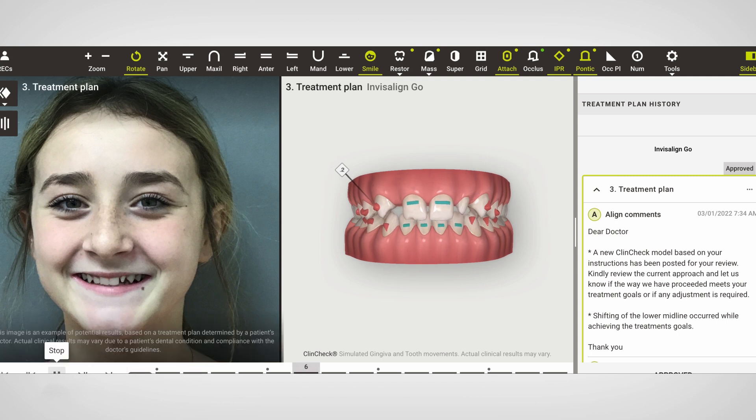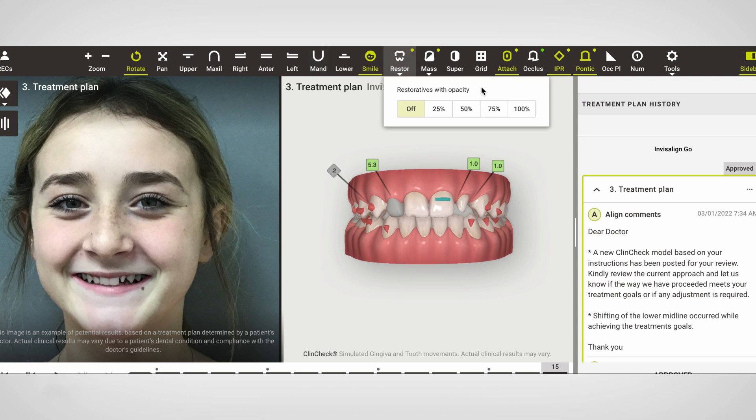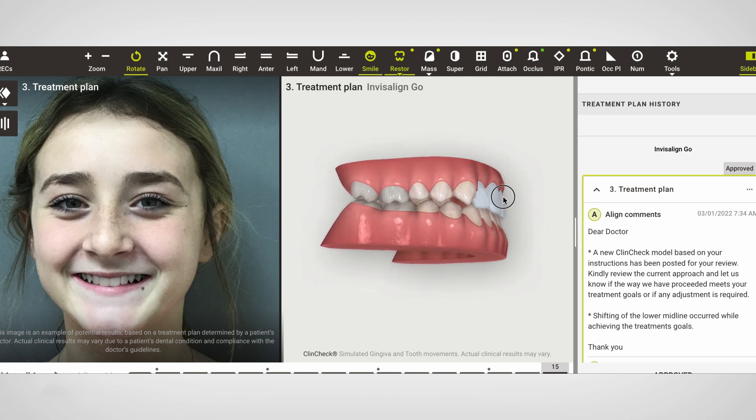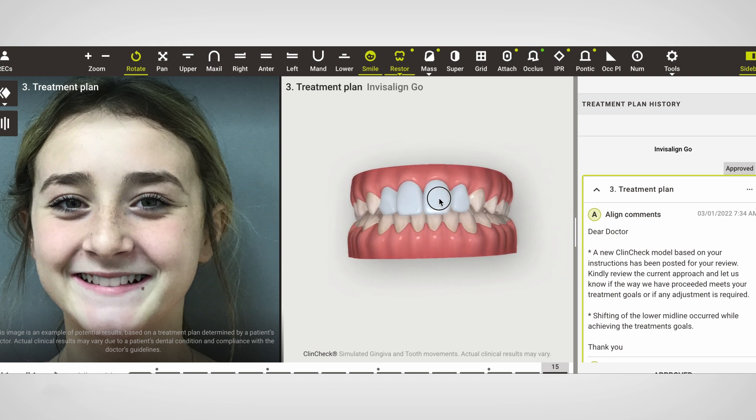We can use the Smile Architect tool to work on symmetry of spacing. And because you're doing clear aligner therapy, you can do this in stages as you're starting to put pieces of the puzzle together. You have the benefit of additional aligners that you can go in and tweak that tooth position based on what you preliminarily thought would be ideal.